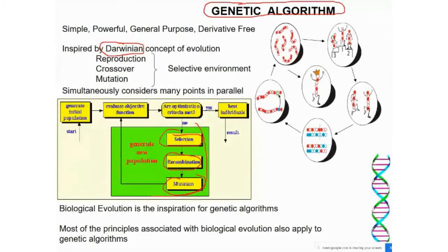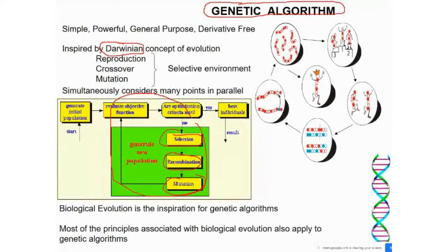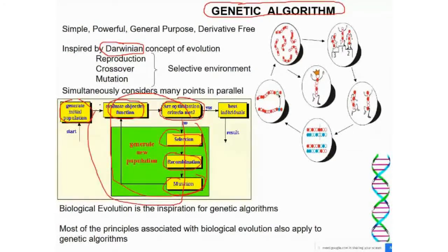In the genetic algorithm we have three things: selection, crossover, and mutation, and we continuously perform these tasks to get an optimal solution. Even for machine learning — if you have an SVM or a neural network where you want to learn the weights — you can use the genetic algorithm or other evolutionary computation flavors to optimize the weights and parameters. Initially we generate a population, then evaluate the fitness of the population, check whether optimization has been reached, and if not, perform selection, crossover, and mutation across several generations until we get an optimal solution.